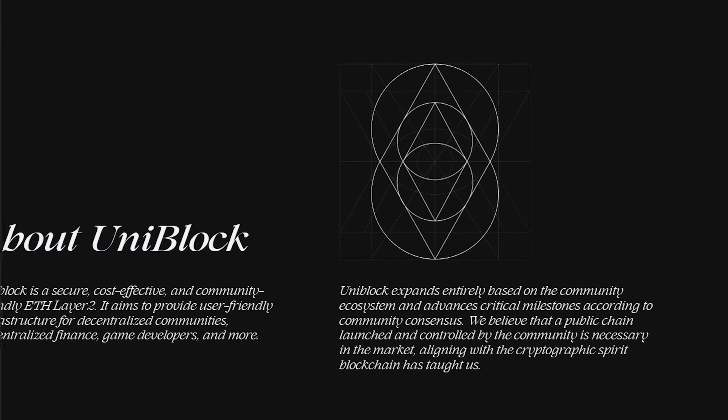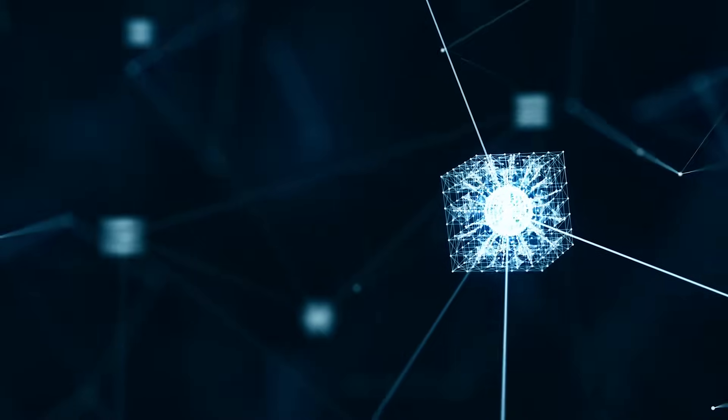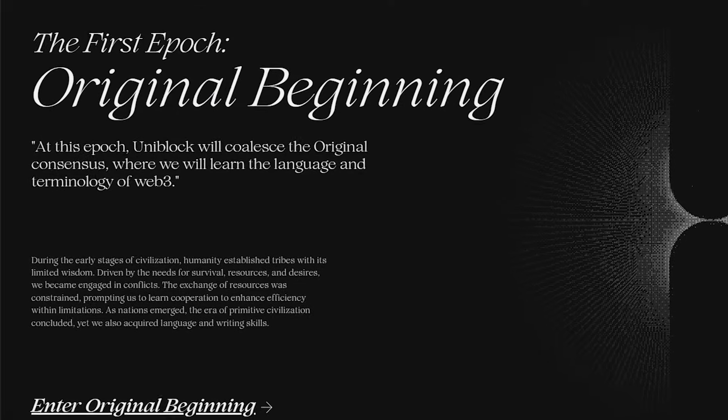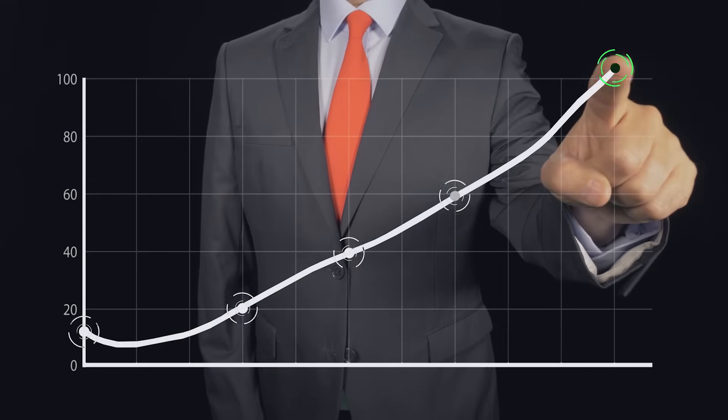Uniblock is a secure and cost-effective Layer 2. It aims to provide user-friendly infrastructure for decentralized communities, DeFi, game developers and more. This project expands entirely based on the community ecosystem and advances critical milestones according to community consensus. Uniblock believes that a public chain launched and controlled by the community is necessary in the market, aligning with the cryptographic spirit. Uniblock is an application based on the OP stack, so it will grow exponentially like other similar projects.